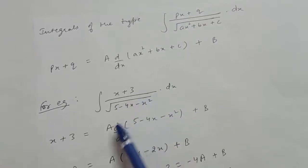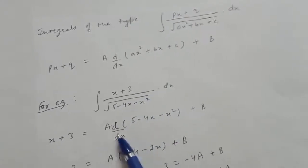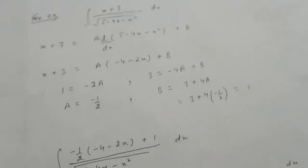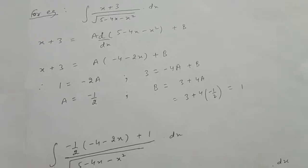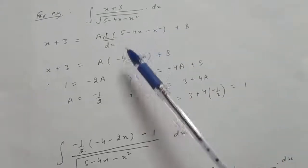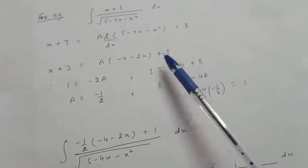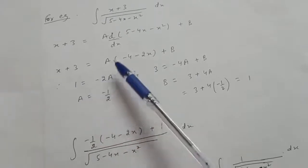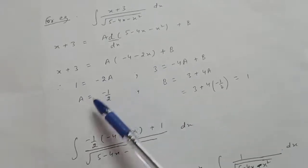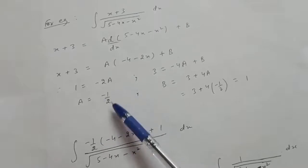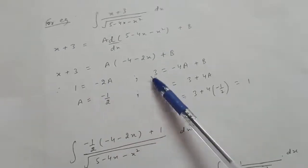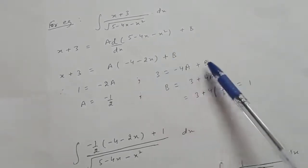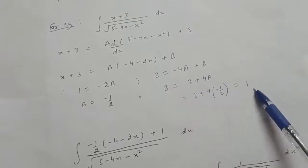For the integral (x + 3)/√(5 minus 4x minus x²) dx, write x + 3 as A times the derivative of (5 minus 4x minus x²) plus B. The derivative is minus 4 minus 2x. Comparing coefficients: coefficient of x gives A equals minus 1/2, and the constant term gives B equals 1.